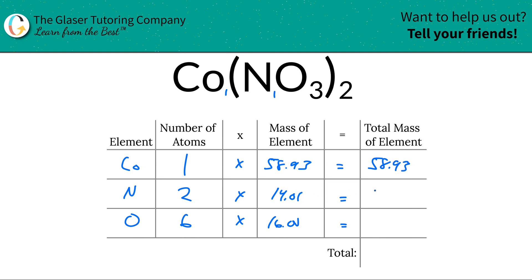When we multiply this across, it would be 58.93 units of mass. Then for nitrogen, this would work out to be 28.02. And for oxygen, you'd take 6 times 16, so it'd be 96 total units of mass.